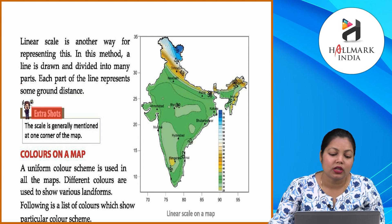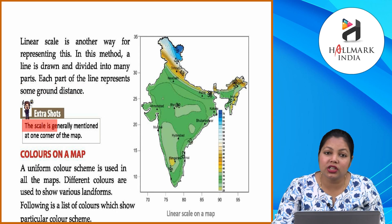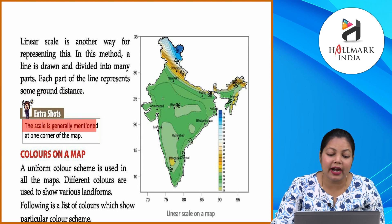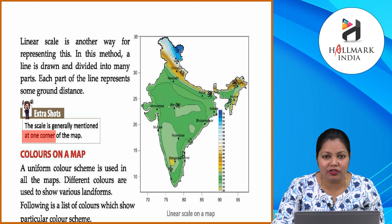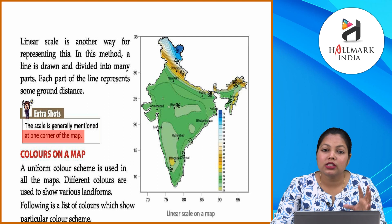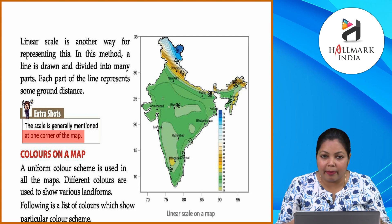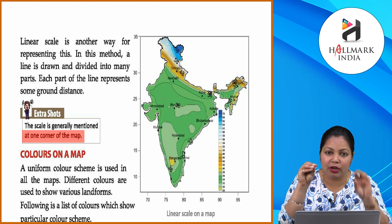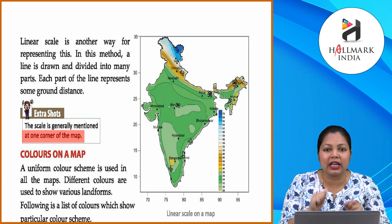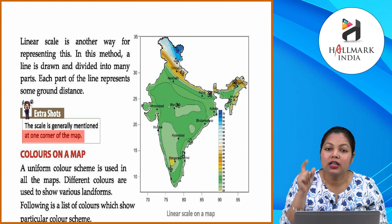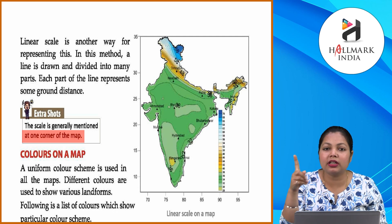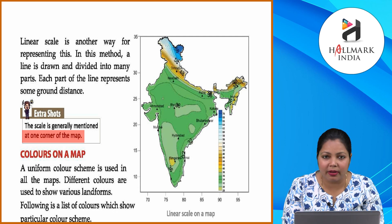Extra shots: The scale is generally mentioned at one corner of the map. For example, map ki kisi bhi corner par scale bataya diya jata hai ke ek centimeter kitne kilometers ke barabar hai.